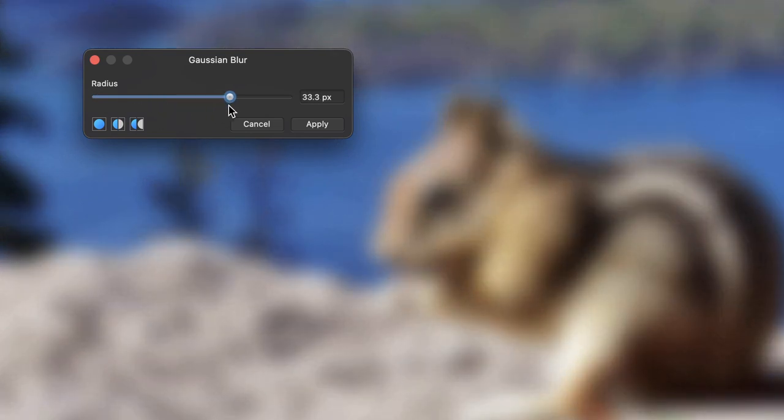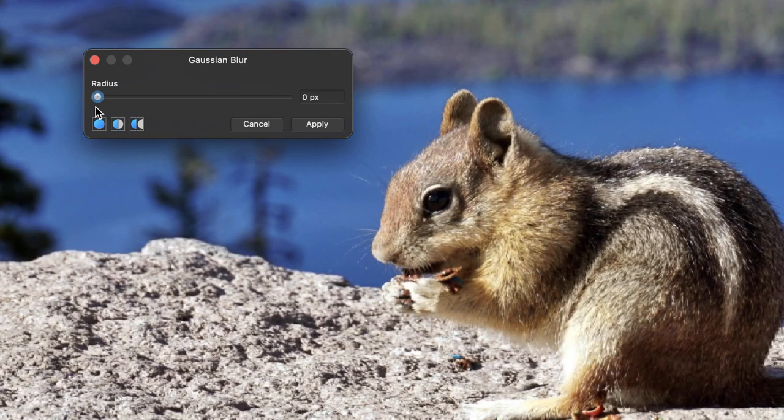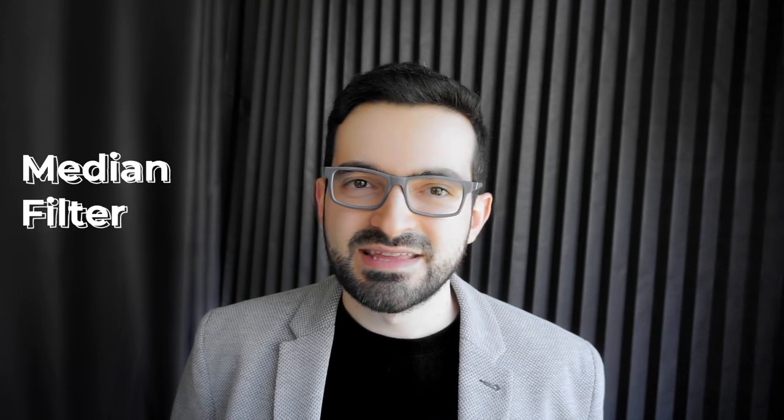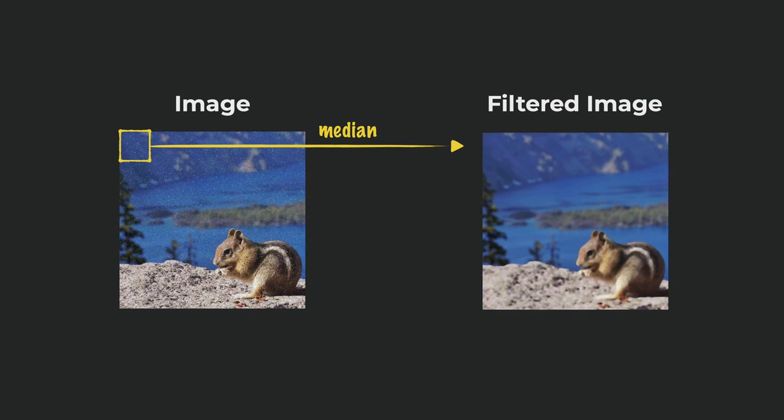This is how Gaussian blur filters work. You can also approximate a Gaussian filter by applying a box filter multiple times. Gaussian filter is commonly used to reduce noise in images or other kinds of signals. It's simple and fast, but it blurs out everything and doesn't preserve the edges. What if we took the median of the pixels within this window instead of the average? That's what the median filter does. Median filter somewhat preserves the edges and is more effective against impulse-like noises, like shot noise or salt and pepper noise. The larger the window size, the more cartoonish the image becomes.